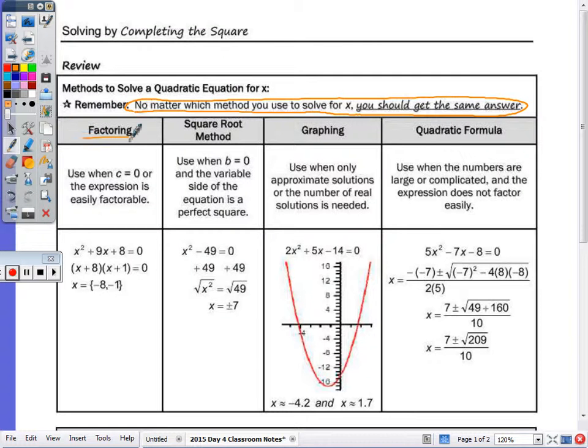So we can solve by factoring, and I have some suggestions on when to use the factoring method. When c equals 0, or you can easily factor it. The square root method when your b is 0. Remember in a quadratic equation, the standard form is y equals ax² plus bx plus c. So when you have no x term, as in x² minus 49, you can factor that, x plus 7 times x minus 7, but it may be shorter and quicker to move the 49 over and take the square root.